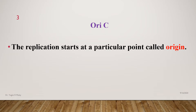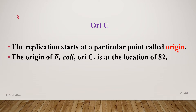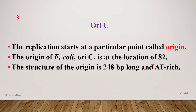What is OriC? In all cases, replication starts at a particular point, which is known as the origin. The origin of replication in the case of E. coli is called OriC, and it is present at the location of 82.